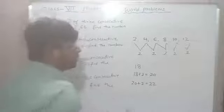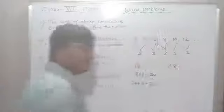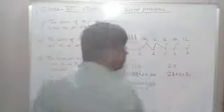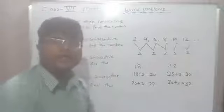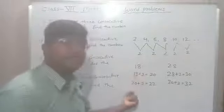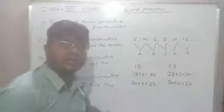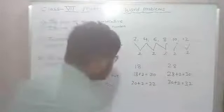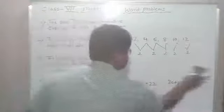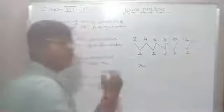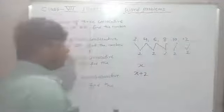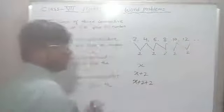If we know any even number, we simply add 2 to get the next consecutive even number. For example, if the first number is 28, the next is 28 + 2 = 30, and 30 + 2 = 32. Now, in place of specific numbers like 18 or 28, suppose the first even number is x. Then the next even number is x + 2.